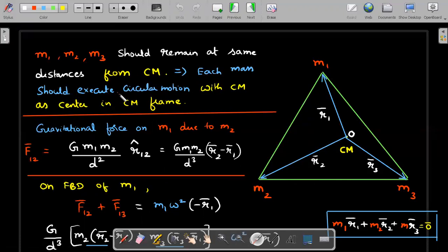So each mass therefore should execute circular motion with center of mass as center in the CM frame. Someone is sitting in the CM frame and watching this particles. They should maintain this distance. It's obvious that they execute circular motion. So let's check for only M1 what it is doing.